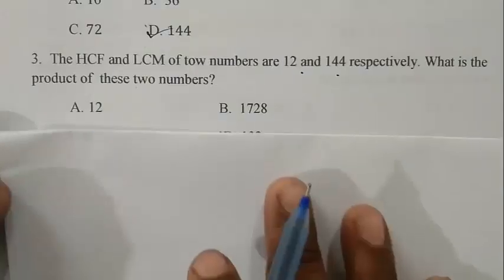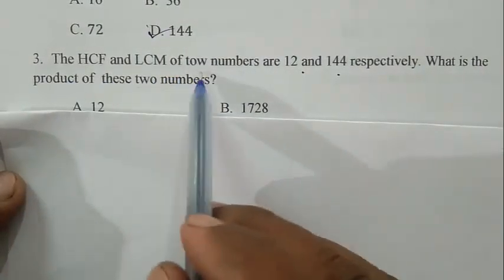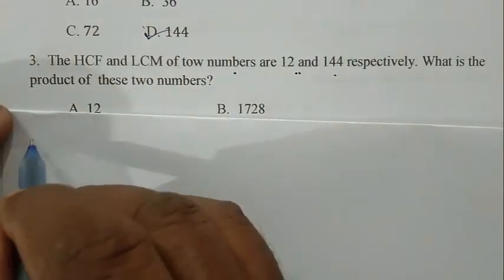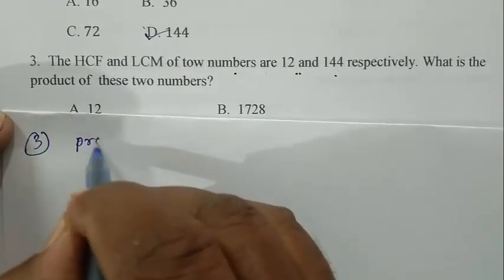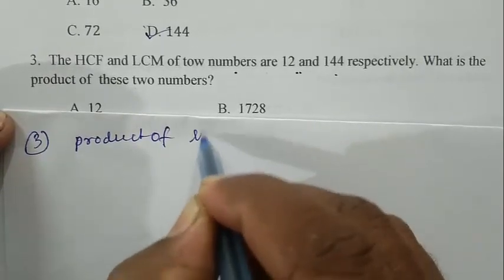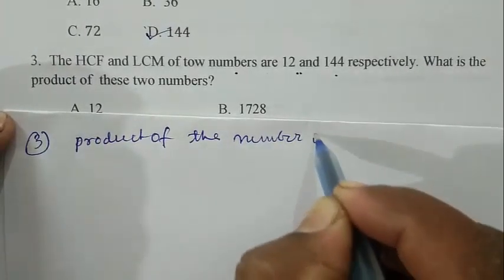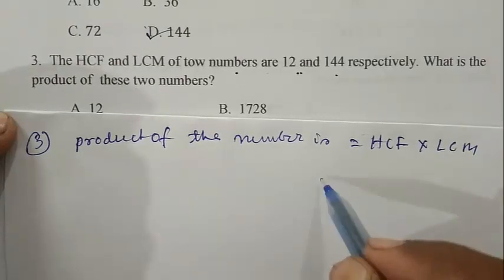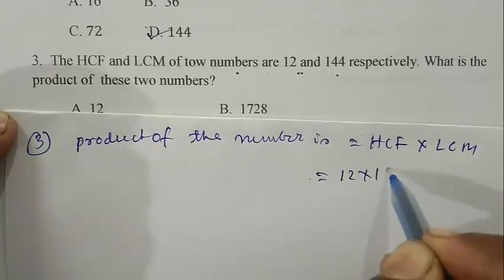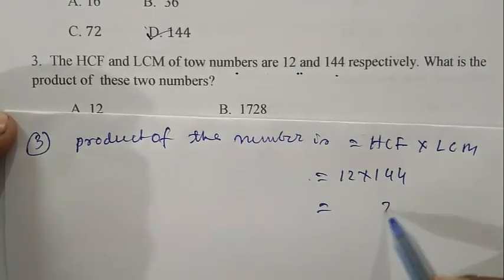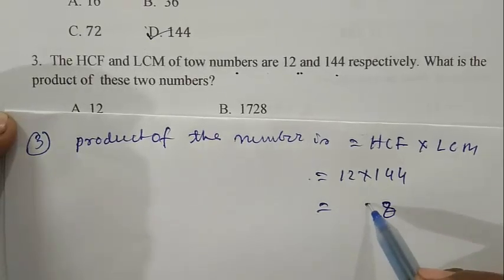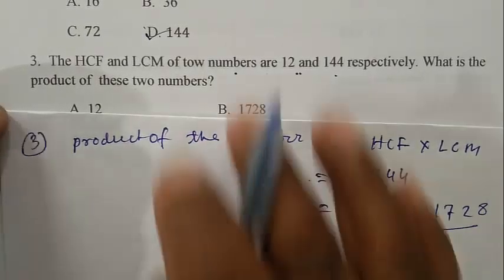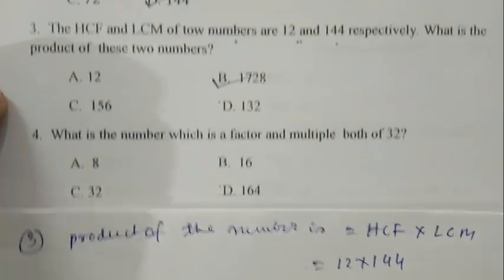Question number three: the HCF and LCM of two numbers are 12 and 144 respectively. What is the product of these two numbers? Product of the numbers is equal to HCF into LCM, that is 12 into 144, that is 1728. So B is the right answer.